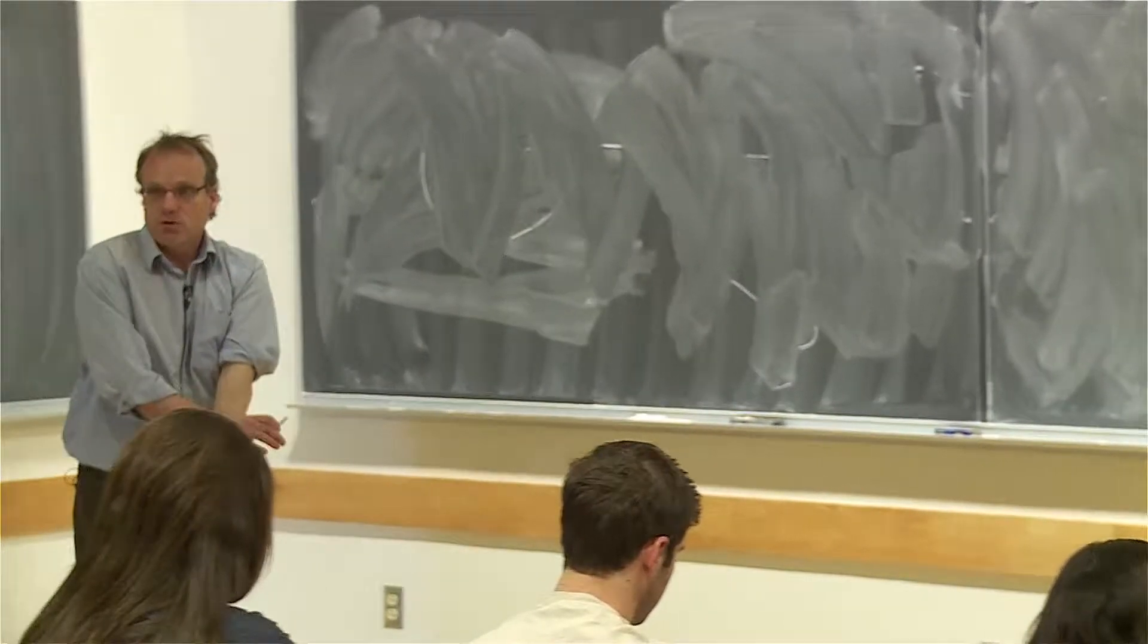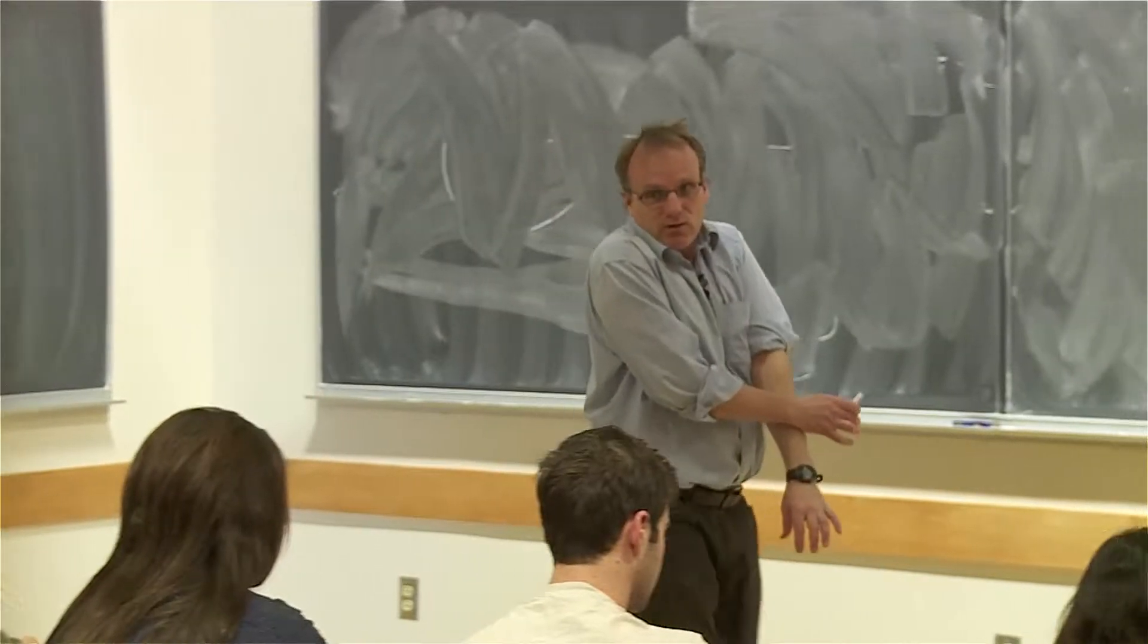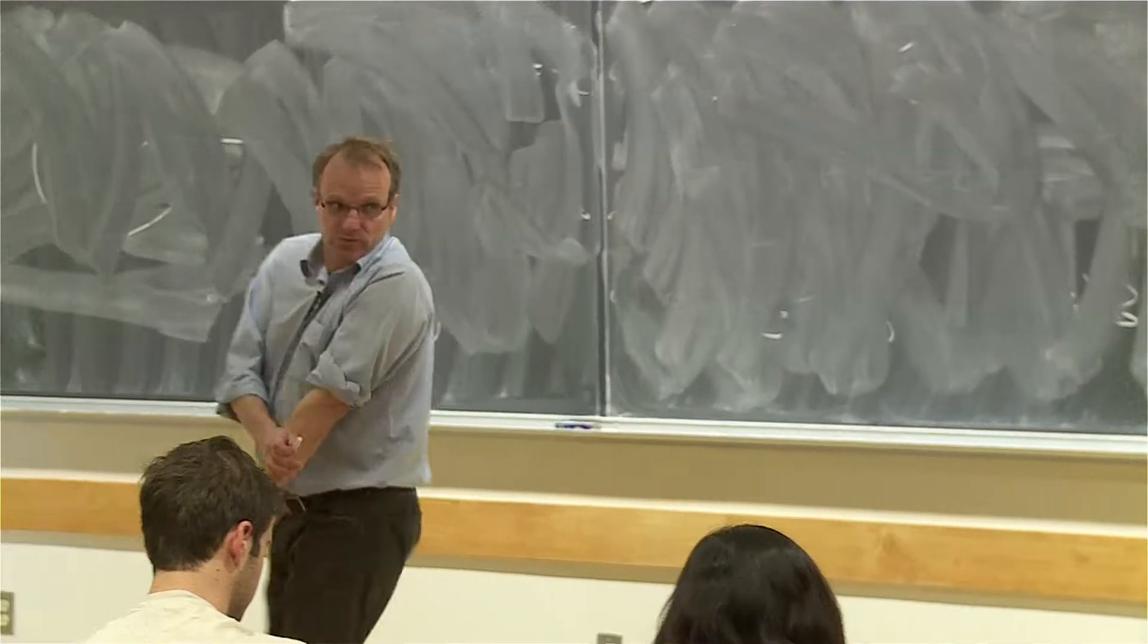In the case of the Earth going around the Sun, the gravitational force is the thing that makes it go in a circle. Why? It seems very weird. Basically, it's because it's perpendicular to the velocity.